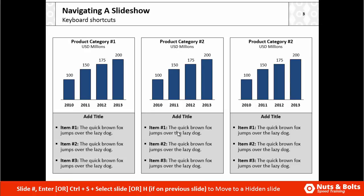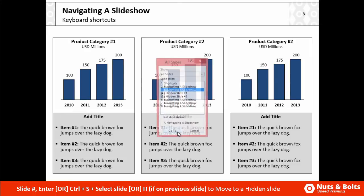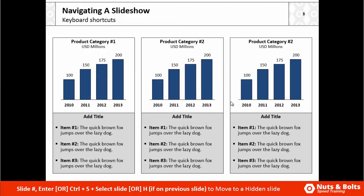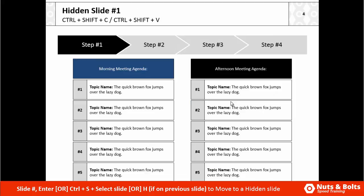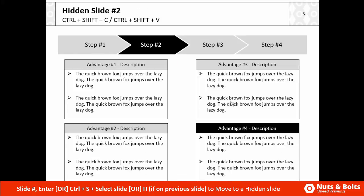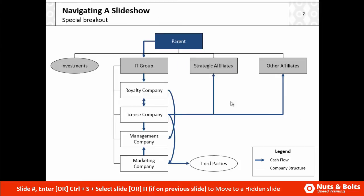To navigate to hidden slides, you can hit the number of the slide if you know it, or hit Ctrl+S and select the slide. Or, if you're on the slide right before the hidden slide, you can simply hit H on your keyboard to jump to the next hidden slide.